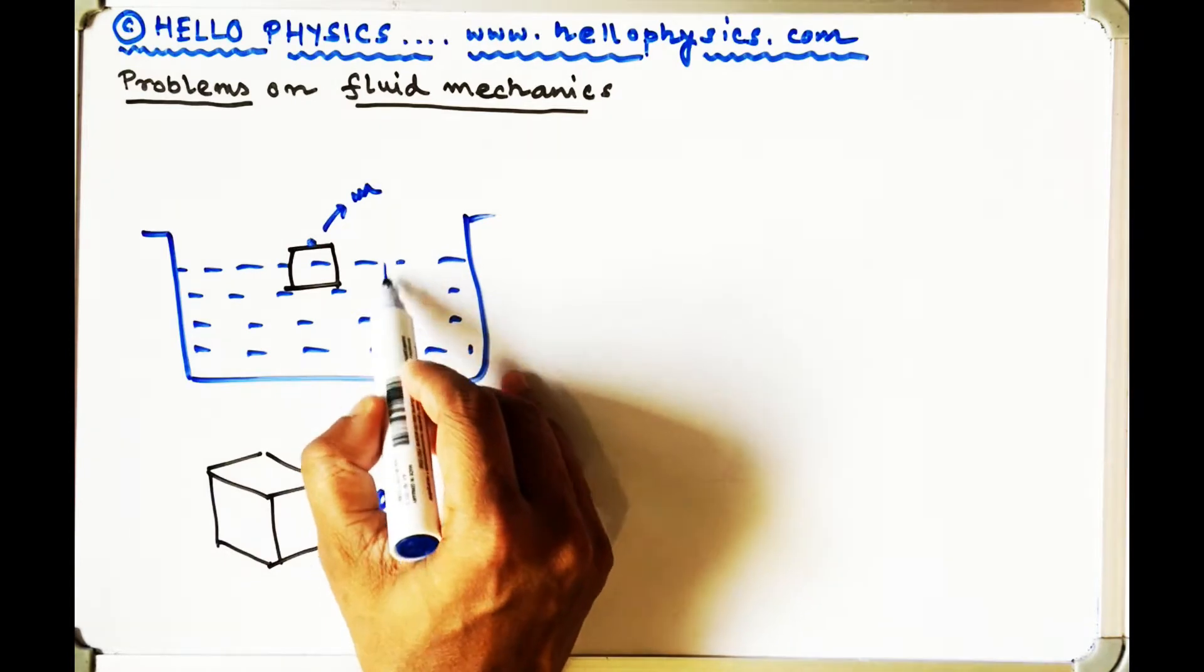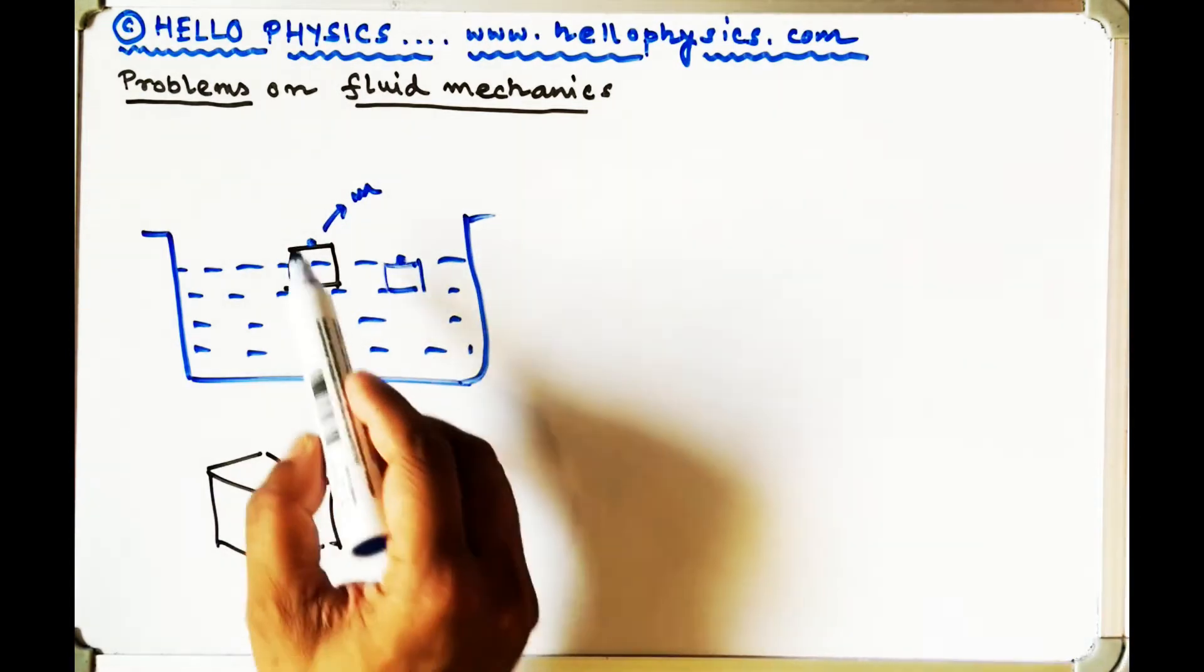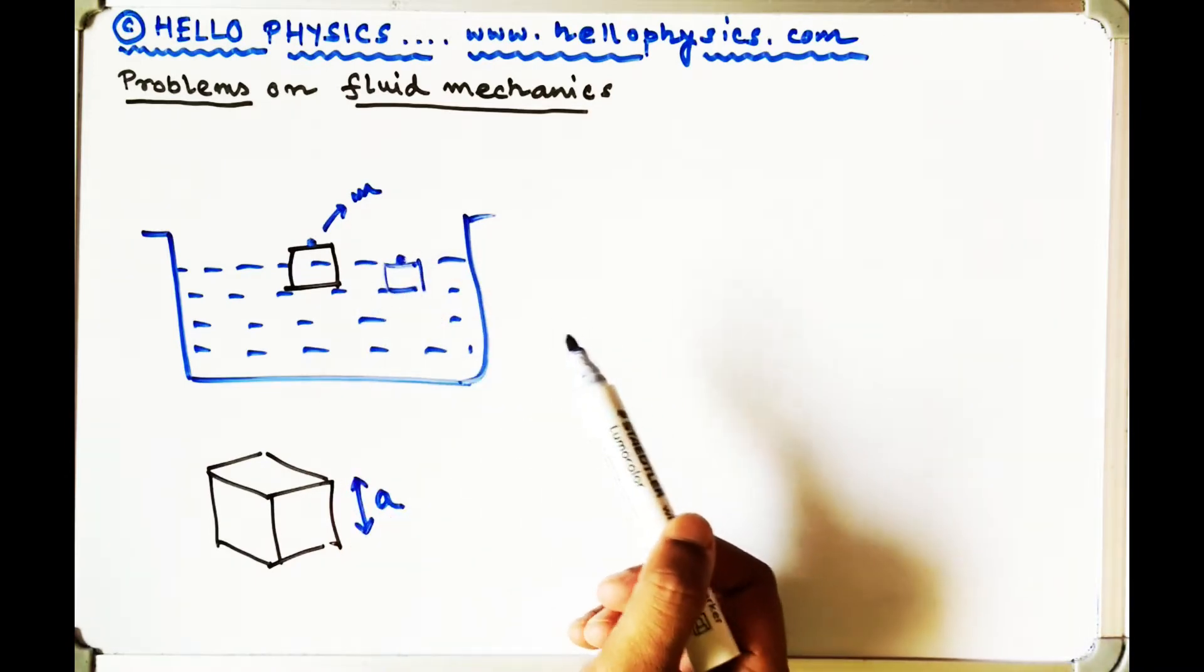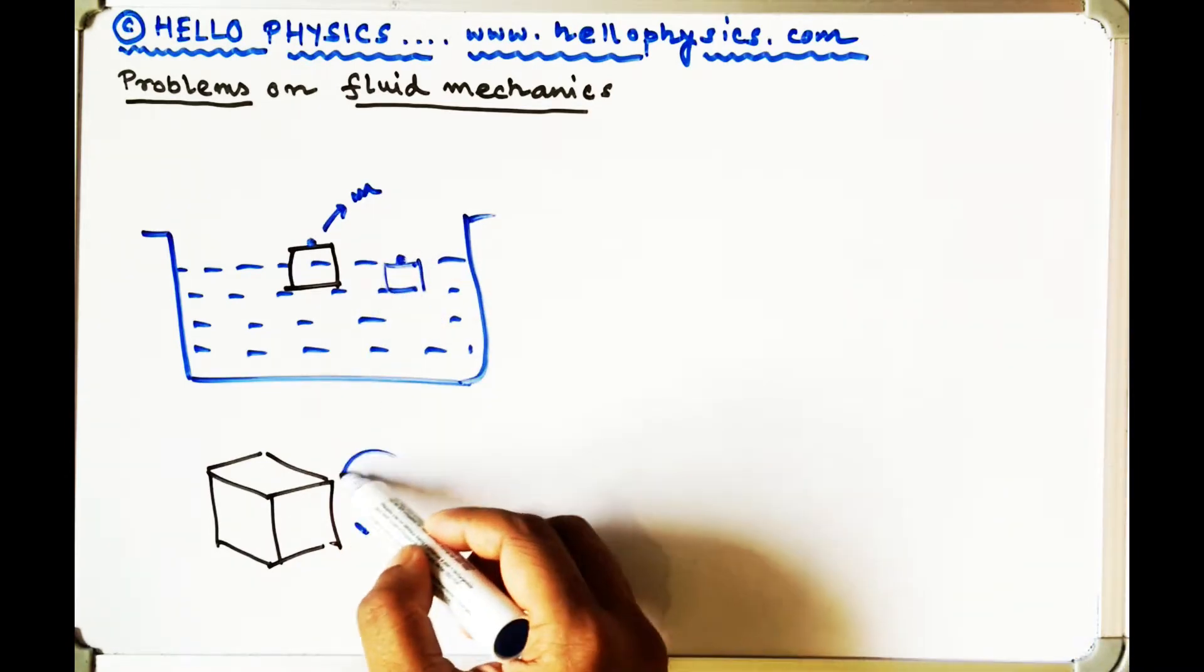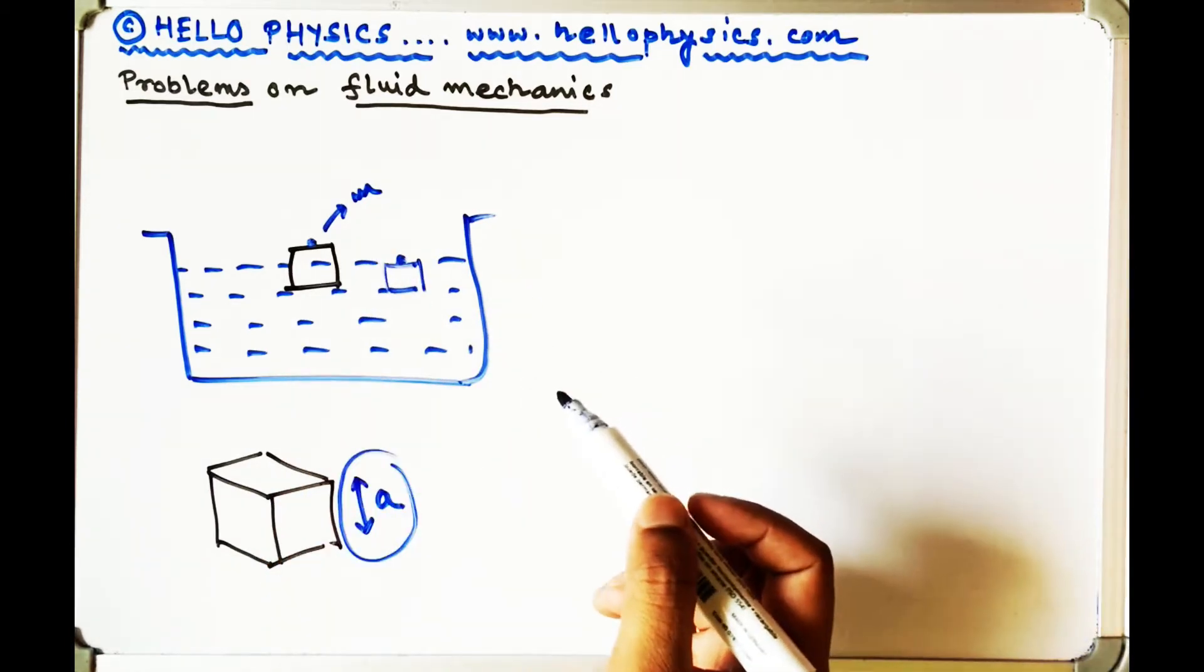So finally the ice cube must be something like this with the particle above the water surface. You have to find out the minimum length of the side of the ice cube so that this happens.